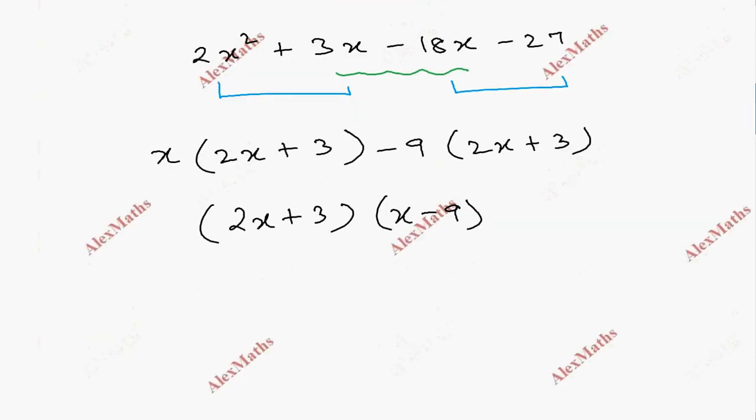So we have 2 factors: x minus 9 and 2x plus 3.